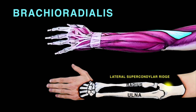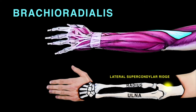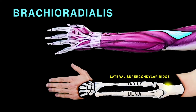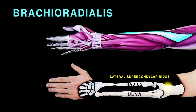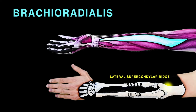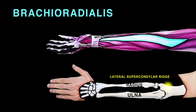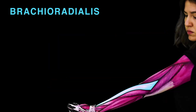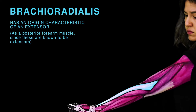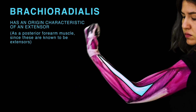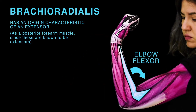The brachioradialis originates from the proximal lateral supracondylar ridge, then attaches to the distal end of the radius, just before the radial styloid process. The brachioradialis has an origin characteristic of an extensor, but it lets you bend your elbow, so it's actually a flexor.